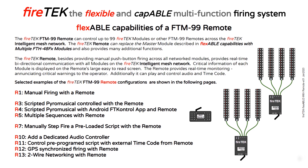The FTM-99 remote can control up to 99 FireTech modules or other FTM-99 remotes across the Intelligent Mesh network. The FireTech remote can replace the master module described in the flexible capabilities with multiple FTH48FX modules. Besides providing manual push-button firing across all network modules, the FireTech remote provides real-time bi-directional communication with all the modules on the Intelligent Mesh network.